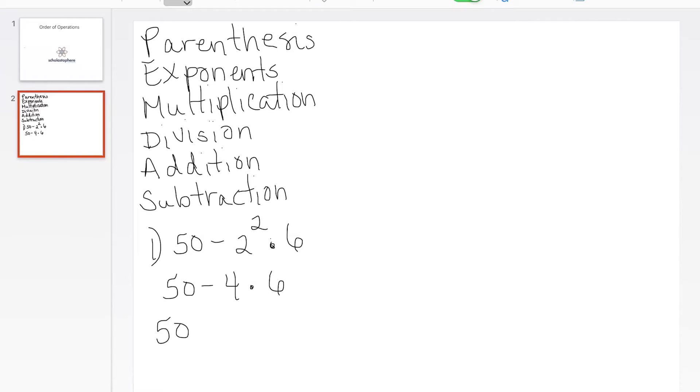So we have 4 times 6, which gives us 24. We're going to bring down a 50 and bring down the subtraction sign. So 50 minus 24 gives us 26.